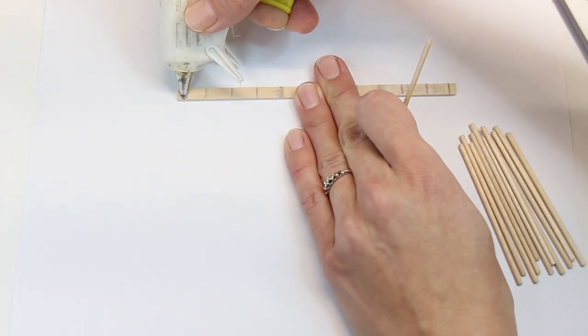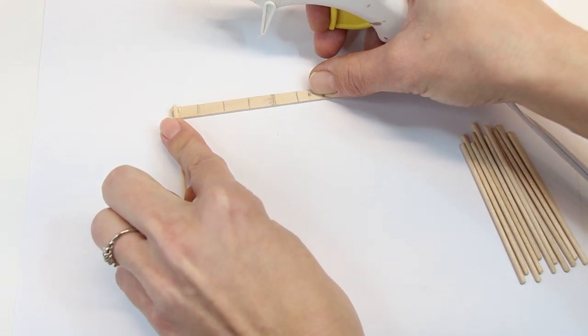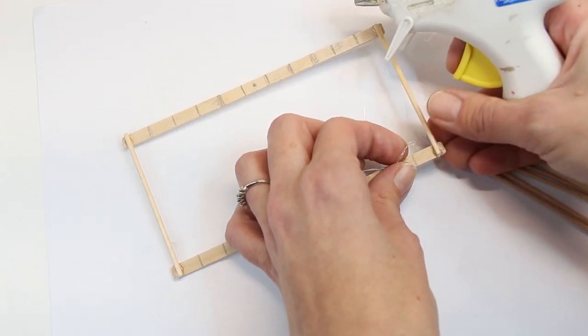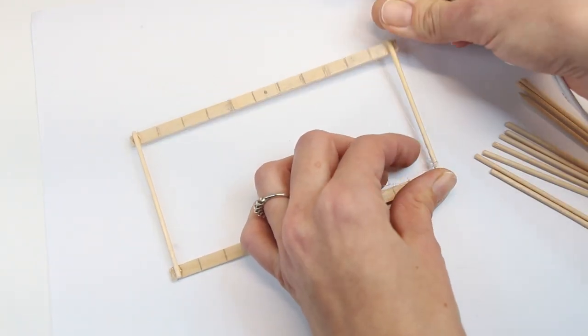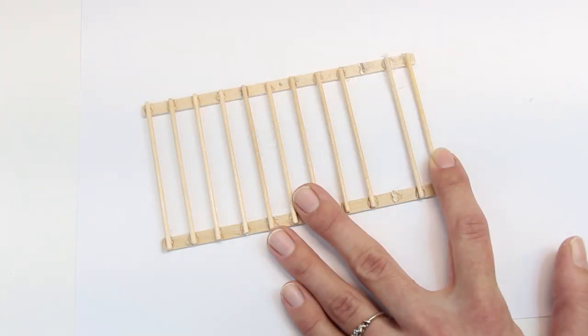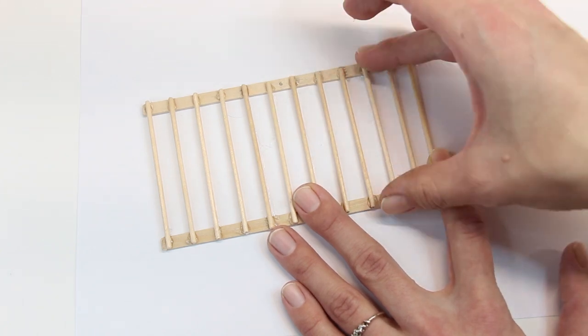Take your glue gun and glue the three inch dowels down on the first and last marks on the two skinny sticks. Check to see if it's square before gluing on the rest. Clean up your hot glue and make sure to get rid of any strings.